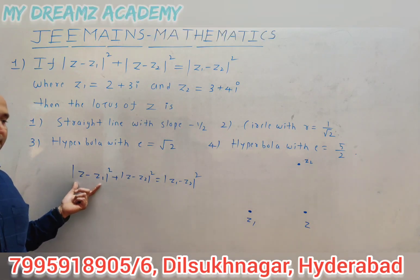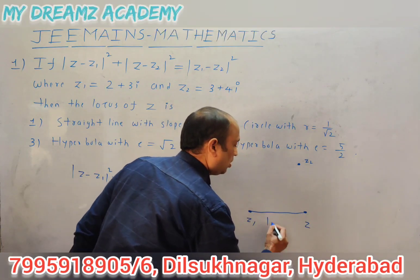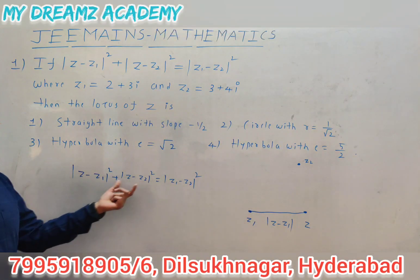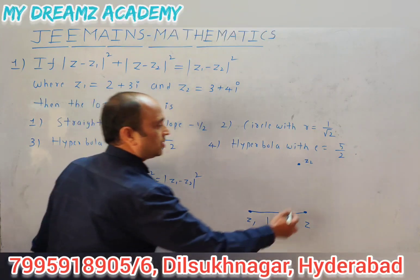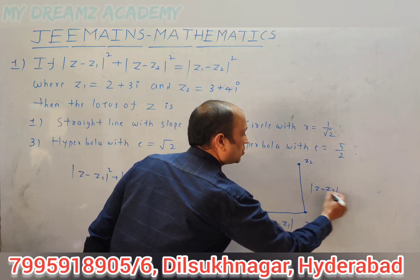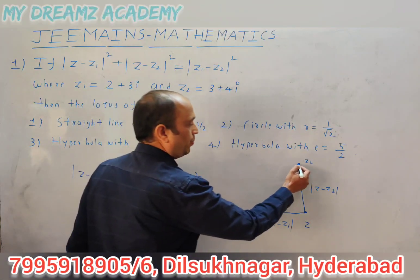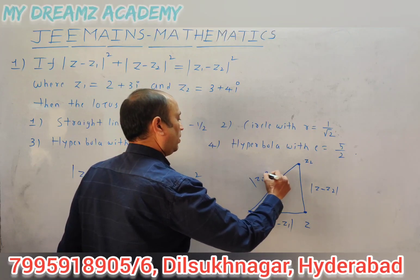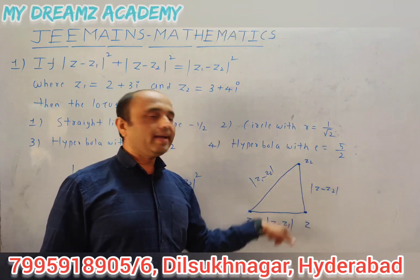Here, |z - z1| is the distance between z and z1, and |z - z2| is the distance between z and z2, and |z1 - z2| is the distance between z1 and z2. So z1, z, z2 form a right-angle triangle.